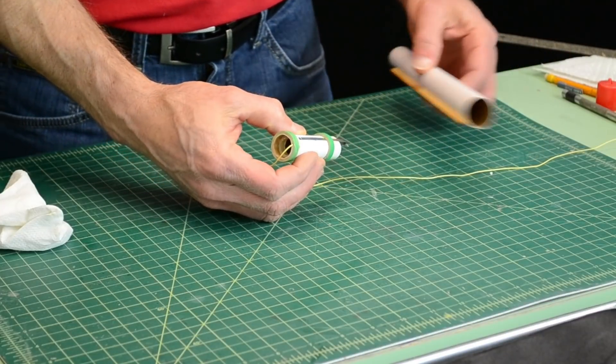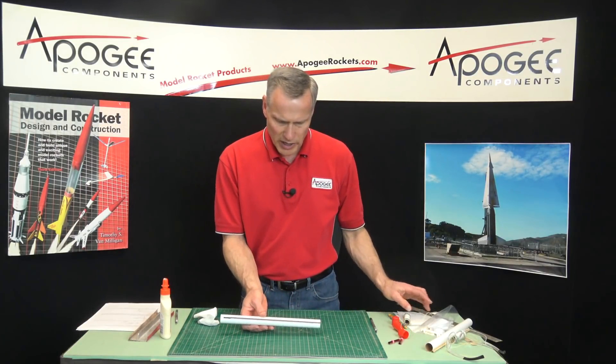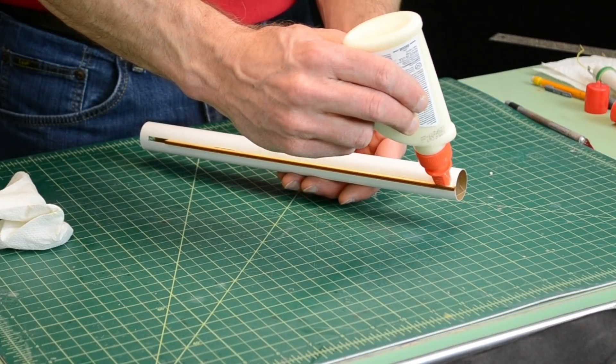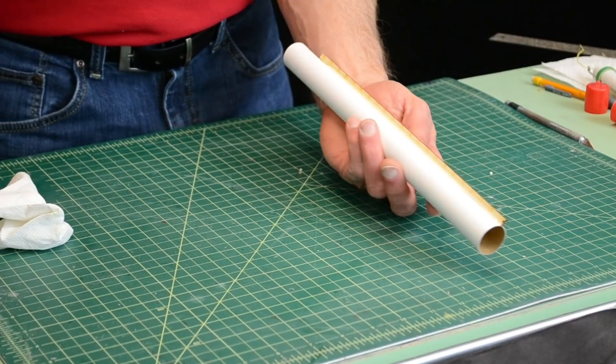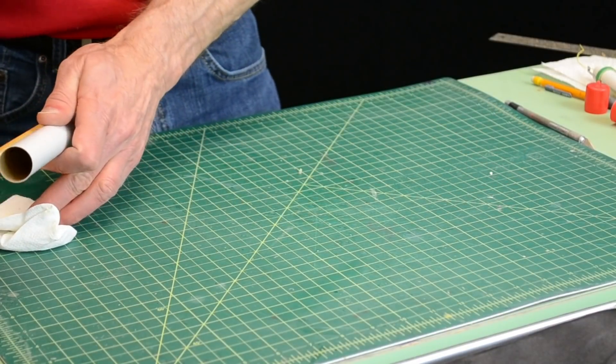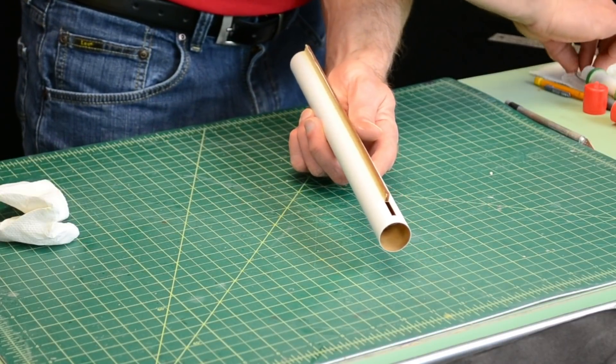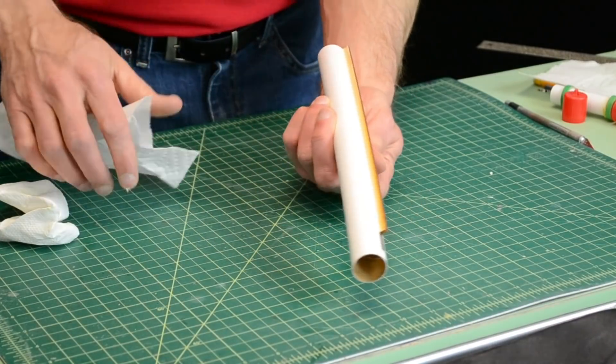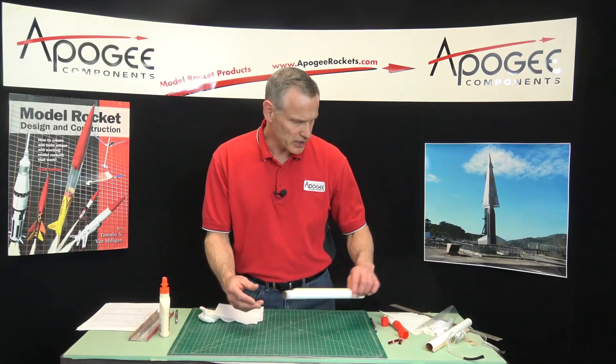So while that's drying, I'm going to go back to this part here and I'm going to put on my glue fillets. Again, this is like doing a fin. We're going to put a bead of glue on both sides, and then we're going to take our finger and we're going to smooth it out. You can see I pulled off a lot of glue off of that side, and do it on this side. That paper towel is getting pretty saturated with glue, so I'll grab another one. I'm just wiping off the top surface there. Okay, so I got a glue fillet on both sides, and we're going to set that aside and let that dry.